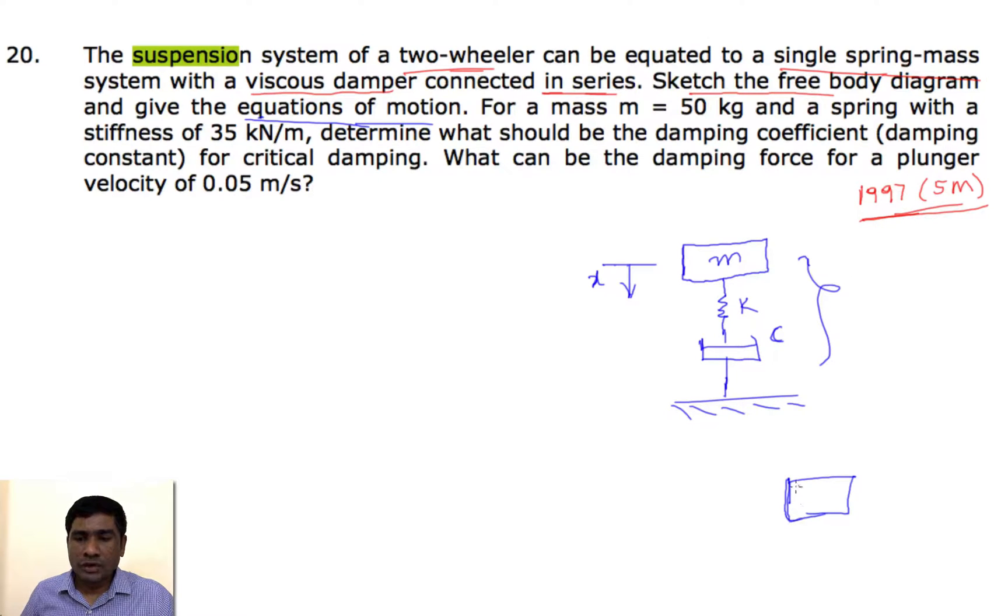If I take a mass m here in the equilibrium position case, in the equilibrium position what happens? This is k into delta, k into delta - delta is the initial displacement which equals m into g. So here k into delta equals m into g. So we can neglect delta and g terms in the final case.